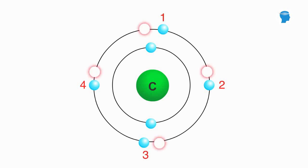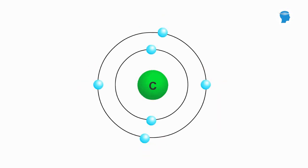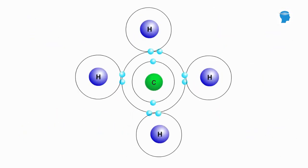To gain the additional 4 electrons, carbon can share with other atoms, and thereby have a completed outer shell. If 1 carbon and 4 hydrogen atoms come together and share their electrons, carbon achieves an octet of electrons.